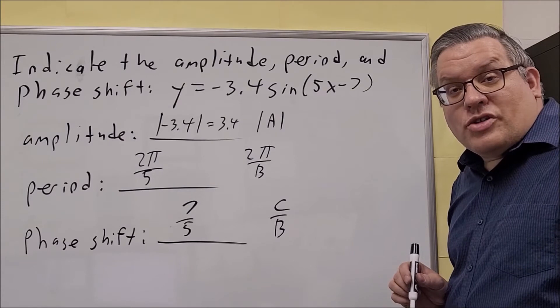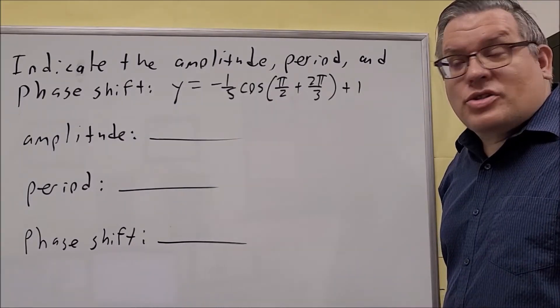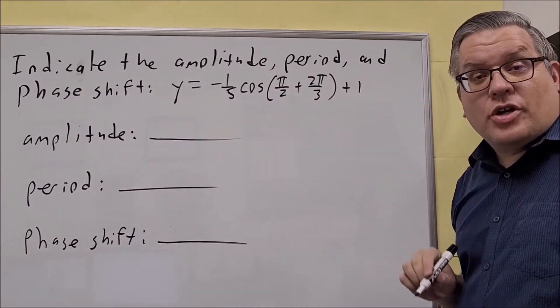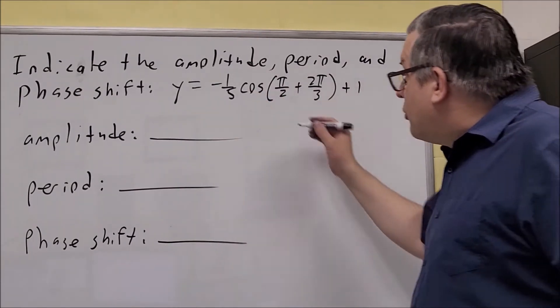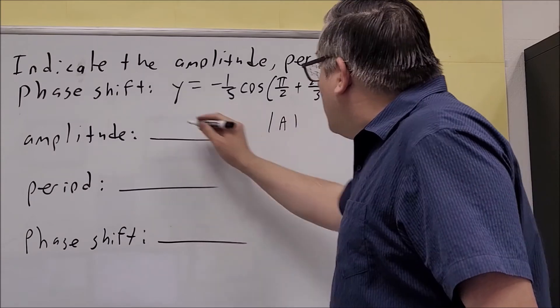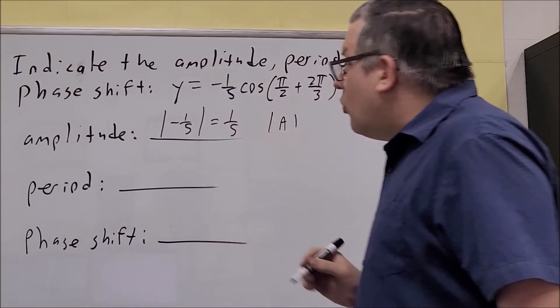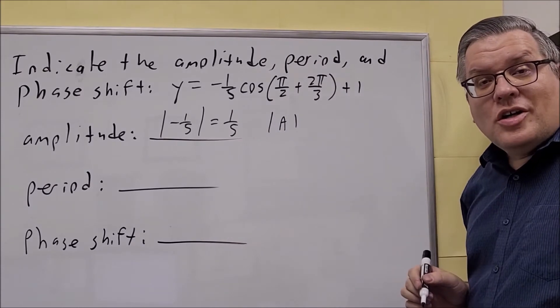Let's take a look at another example. Okay, the next one is a cosine. But we're still going to follow the same formulas. Whether it's sine or cosine, it follows the same ones. Amplitude is still going to be the absolute value of A. The absolute value of negative 1 fifth is 1 fifth. Again, amplitude is always positive.